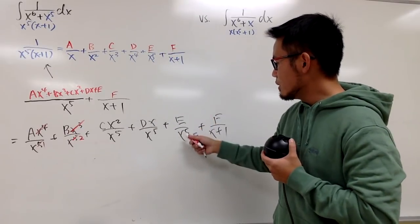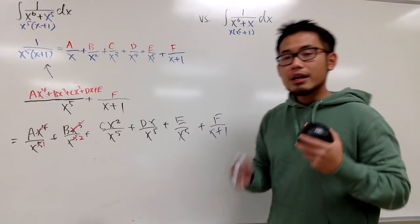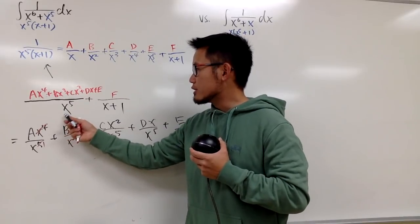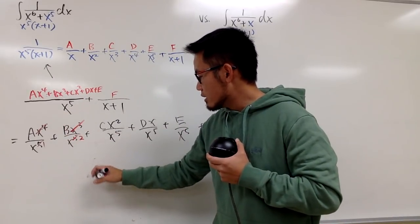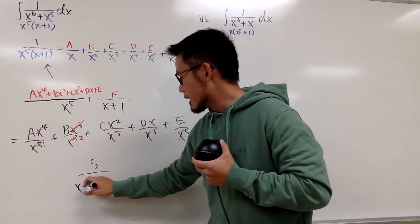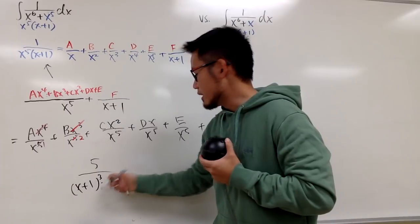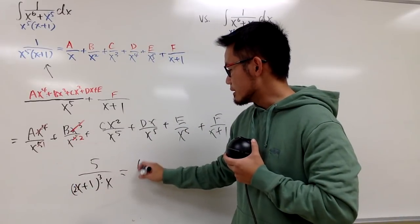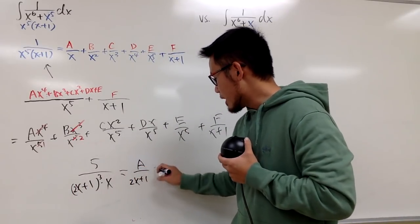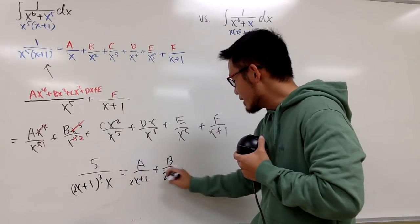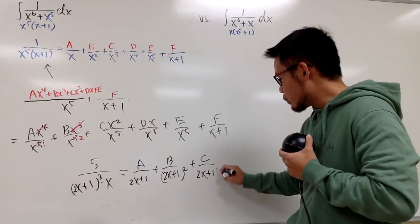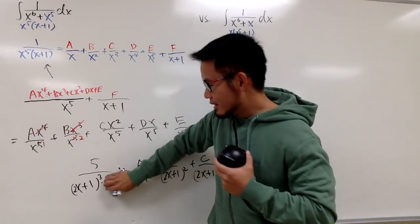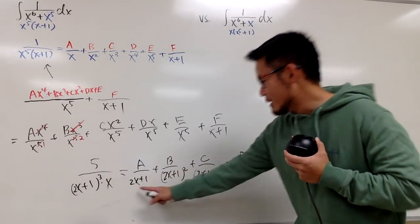At the end we have e over x to the 5th power, and then f over (x plus 1). This is why you have to build up the power. Even though the denominator is just x to the 5th power, sometimes when you have, say, 5 over (x plus 1) to the 3rd power times something, you still build up the power as a over (2x+1) plus b over (2x+1)² plus c over (2x+1)³. Build up the powers — that's the deal.